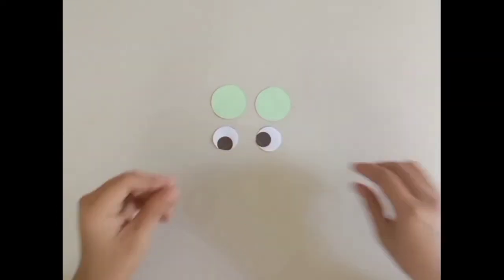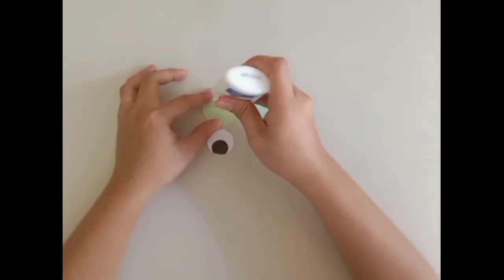Now, get the two small circles and eyes. Glue the eyes on the circles.